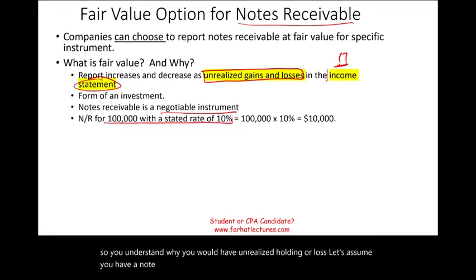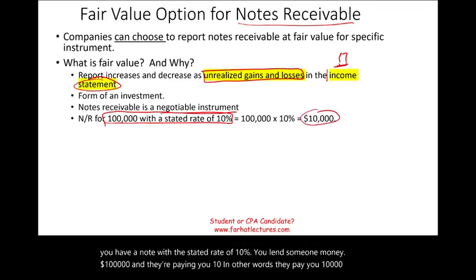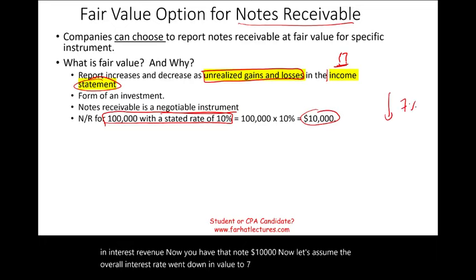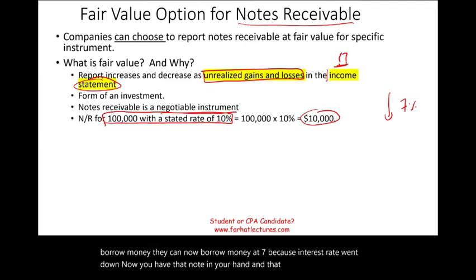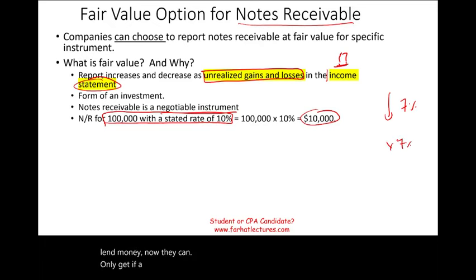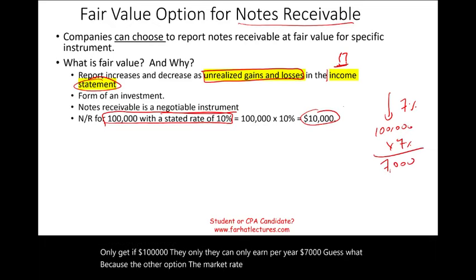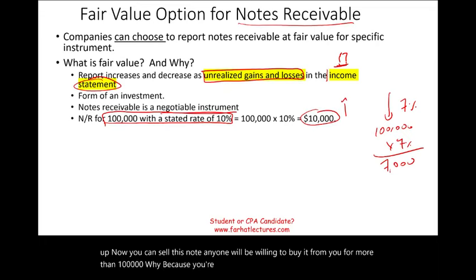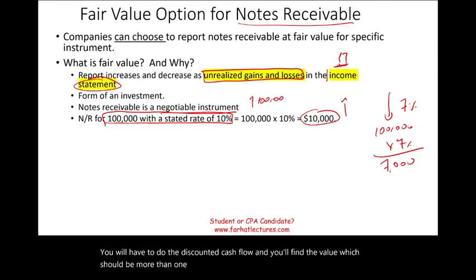Let's illustrate why notes change in value. Assume you have a note with a stated rate of 10% — you lend someone $100,000 and they pay you $10,000 a year in interest. Now assume the overall interest rate drops to 7%. If somebody wants to lend money now, they can only earn $7,000 per year on $100,000. Because the market rate is lower, the value of your note — paying 10% — will go up. Anyone will be willing to buy it from you for more than $100,000. You'd do a discounted cash flow to find the higher value, resulting in an unrealized gain.